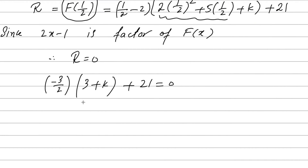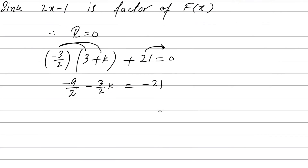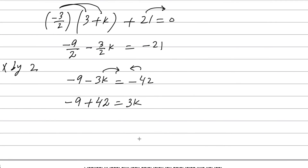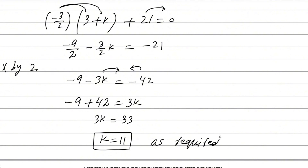Now multiply minus 3/2 through the bracket and move 21 to the right side. This gives minus 9/2 minus (3/2)k equals negative 21. Multiply both sides by 2 to clear the denominator: minus 9 minus 3k equals minus 42. Rearranging, 42 minus 9 equals 3k, so 3k equals 33, and k equals 11. This is as required — second part is done.